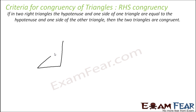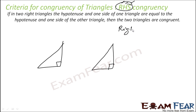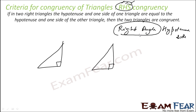And for RHS: as I told you, two sides are equal and the right angle is also equal. RHS stands for Right angle, Hypotenuse, Side. It says that in two right triangles, if the hypotenuse and one other side of the triangle are equal as corresponding sides, then these two triangles are congruent.